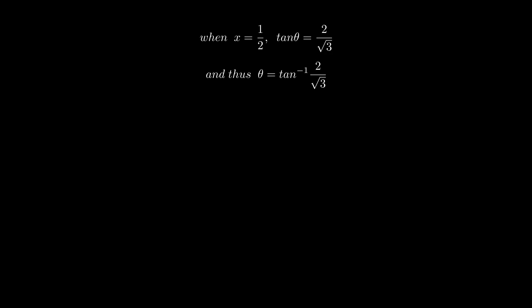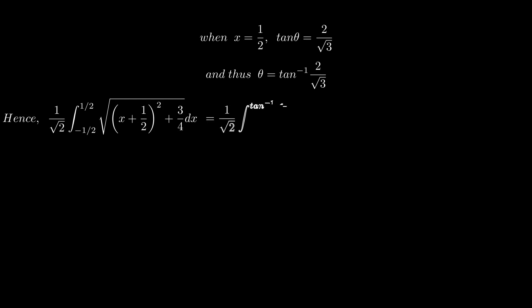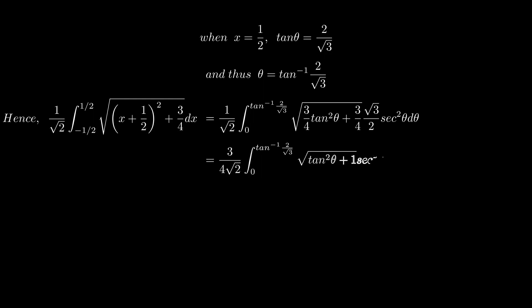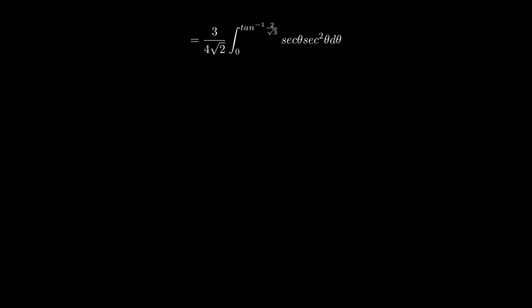Substituting the limits and the value of x with the theta components, we now integrate from 0 to arctan(2 over root 3). The expression becomes 1 over root 2 times the square root of 3 over 4 tan squared θ plus 3 over 4, multiplied by root 3 over 2 sec squared θ dθ. Pulling out the constants gives 3 over 4 root 2, and the integral part becomes tan squared θ plus 1, which equals sec squared θ. The square root of sec squared θ is sec θ, so we have 3 over 4 root 2 times the integral of sec cubed θ.